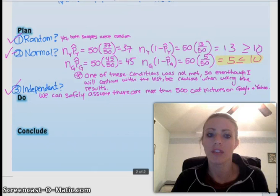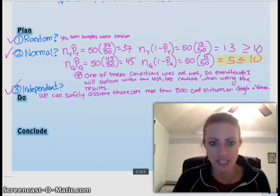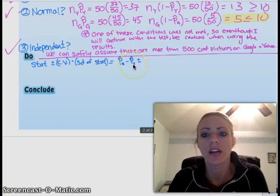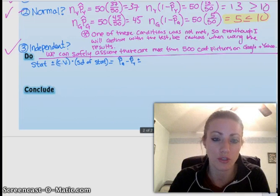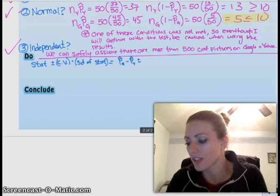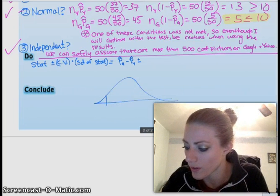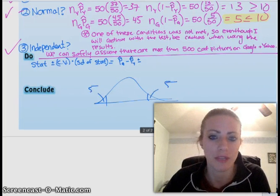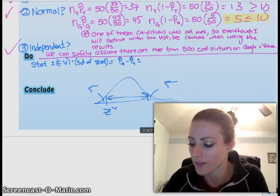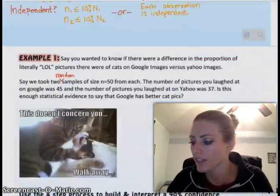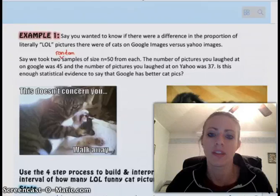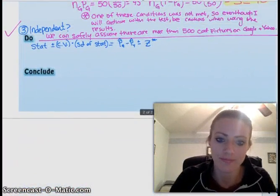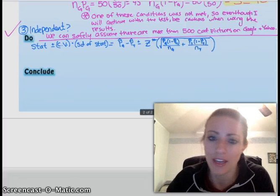Do. We want to set up our confidence interval. Statistic plus or minus critical value times standard deviation of the statistic. So in this case, because we're testing the difference between Google and Yahoo, I have my statistic is the p-hat of Google minus the p-hat of Yahoo, plus or minus my z value, which I get from my z table, corresponding to the 90% confidence level, which is 5% below. 5% here, 5% here gives me 90% in between. So I need to find this z star. And standard deviation of the statistic is that really nasty thing from earlier. Square root of p-1 times 1 minus p-1 over n-1, blah, blah, blah, blah, blah. Check your packet so you don't have to memorize it. At this point, we should probably actually calculate p-hat g and p-hat y. So p-hat g was that 45 out of 50. And p-hat y was 37 out of 50.